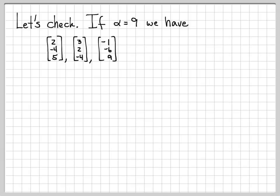So I have found alpha equals 9 is the value of alpha that makes them be linearly dependent. Let's think about that just a little bit. Let's check. When alpha is 9, here are the set of vectors that we have. The first two vectors are what they are. But if I substitute alpha equals 9, the third vector is now [-1, -6, 9].